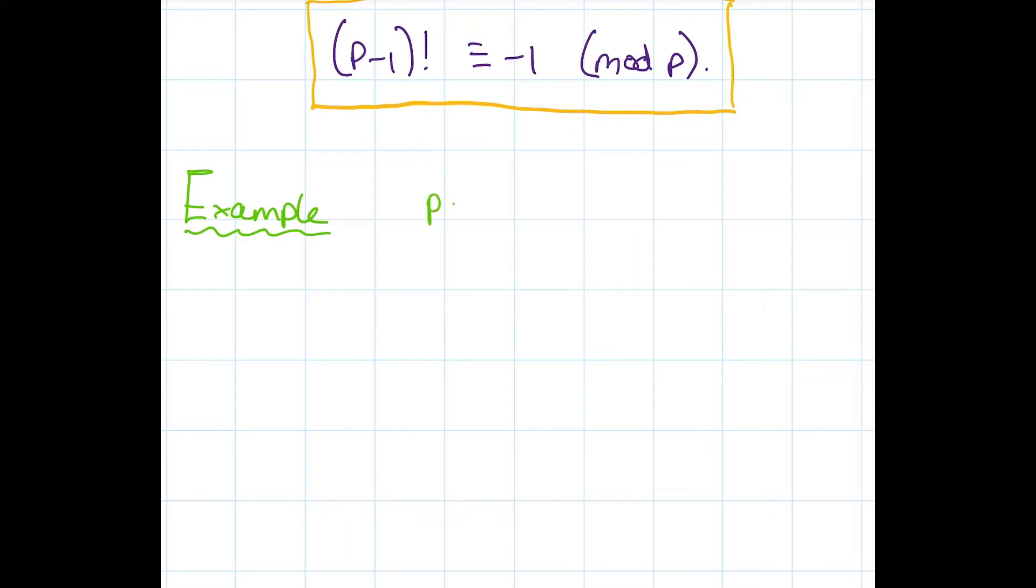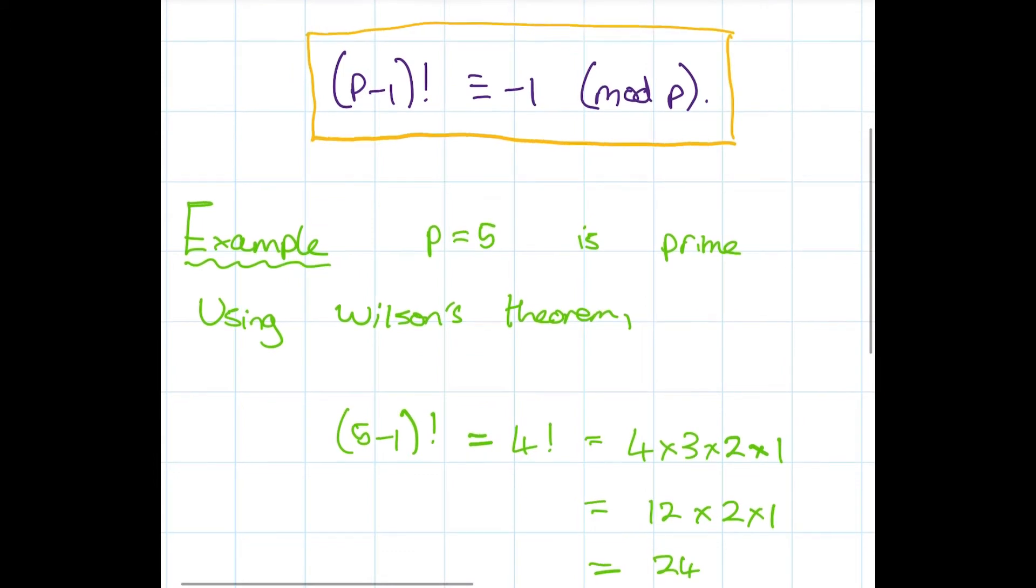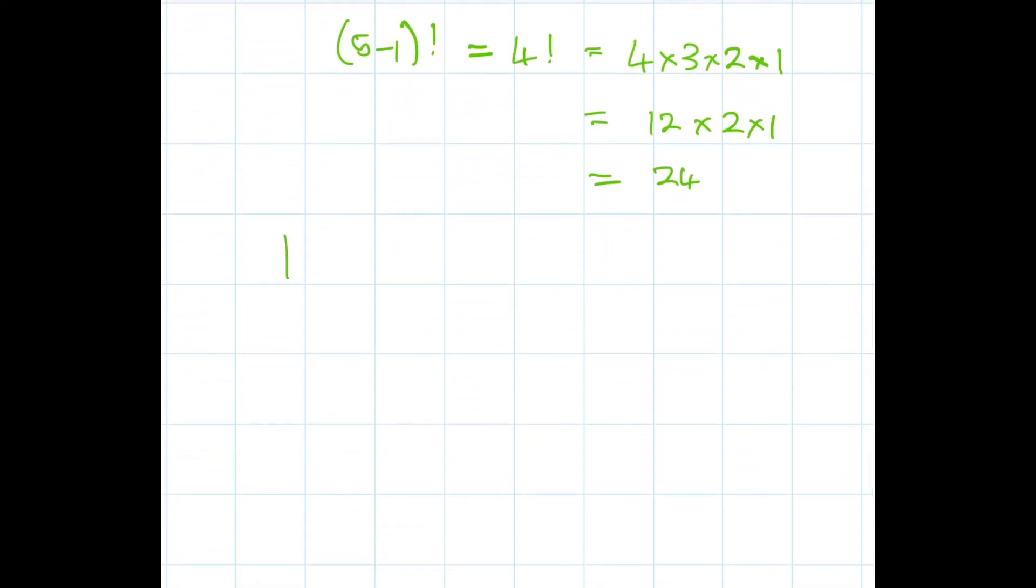We know that P equals 5 is prime because it has no other divisors other than 1 and 5. So let's use Wilson's theorem. We get 5 minus 1 factorial, which is 4 factorial, which is 4 times 3 times 2 times 1, so this is 24. Now we need to check if this is congruent to minus 1 mod 5.